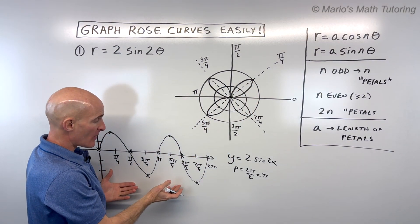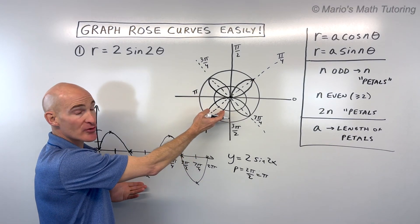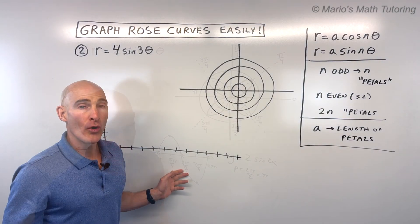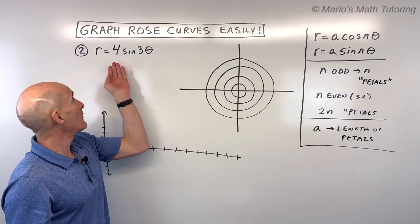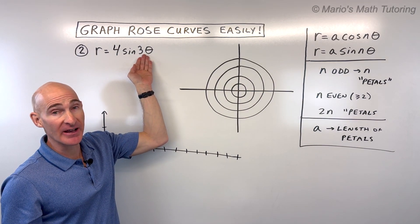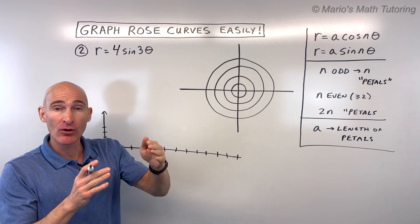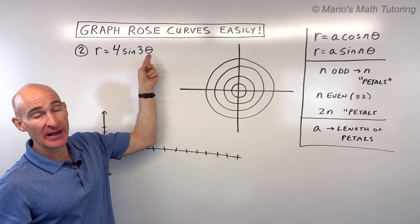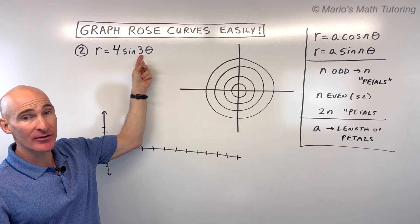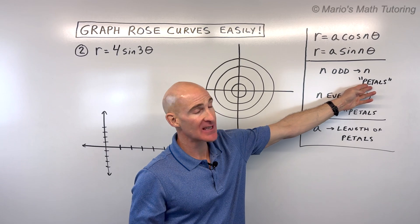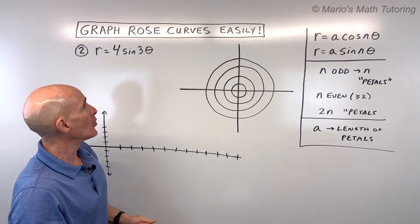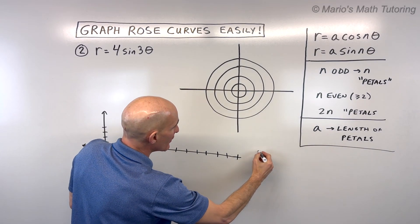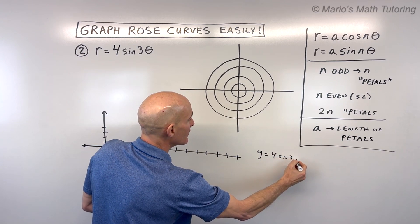A nice way to do this is to start by graphing in the Cartesian plane and then transfer it to the polar graph. Now let's look at example two where n is odd. We'll graph r equals 4 sine 3θ. The a value is 4, so the petals are 4 units long. The 3 is an odd coefficient in front of θ, which tells us we're going to have exactly 3 petals — when n is odd, you get that same number of petals.